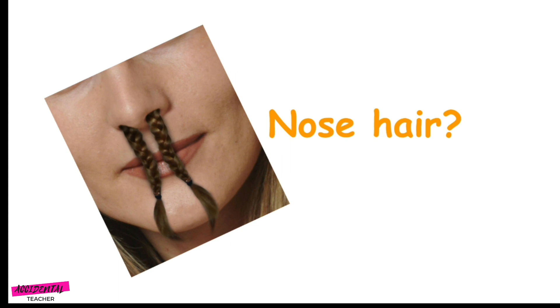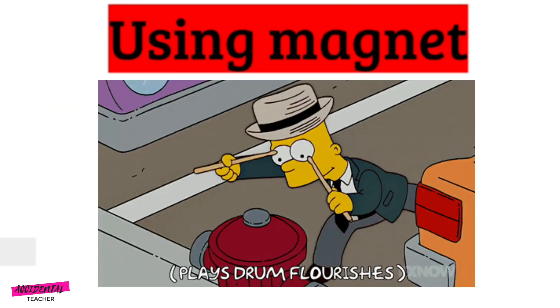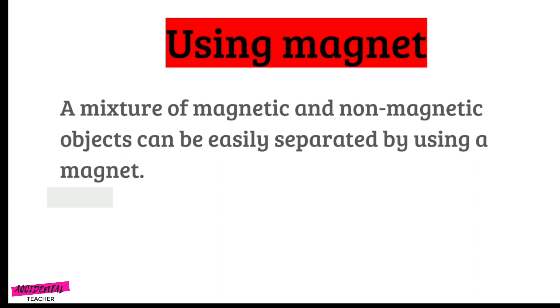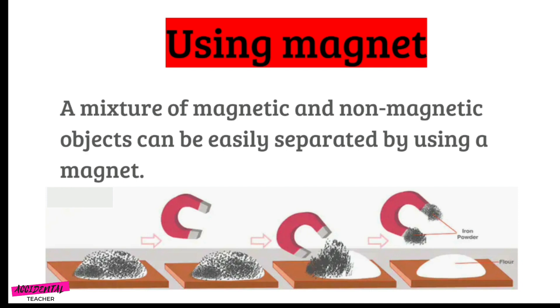Can you think of any other objects which act as a filter? The last method is separating a solid mixture by using a magnet. A mixture of magnetic and non-magnetic objects can be easily separated by using a magnet. For example, iron powder and flour can be separated by using a magnet — the magnet will attract the iron powder so that it is separated from the flour. Can you think of how this is used in our daily life?